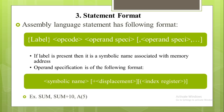Now we will see the statement format. An assembly language statement has the following format: we specify the label first if required, then the opcode, after this the operand specification. The square brackets indicate optional parts — you may include the operand specification as per your requirement. If a label is present, it is a symbolic name associated with the memory address.